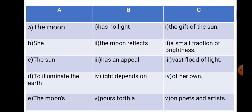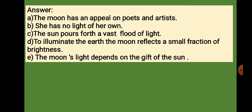Now you see what will be the right answer. Answer A: The moon has an appeal on poets and artists. B: She has no light of her own. C: The sun pours forth a vast flood of light. D: To illuminate the earth, the moon reflects a small fraction of brightness. E: The moon's light depends on the gift of the sun.